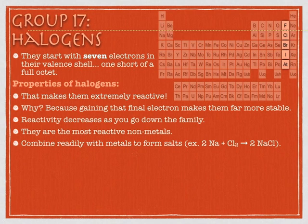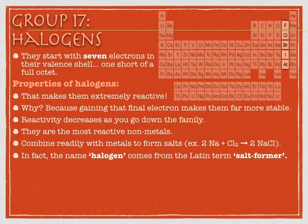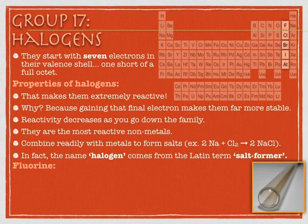The very name halogen comes from the Latin term for 'salt-former.' The halogens will happily react with things that want to give up electrons. That's why chlorine and sodium make such a fine pair — sodium wants to give up electrons and chlorine wants to gain them. That is what's going to be called an ionic bond. We'll talk more about that later.